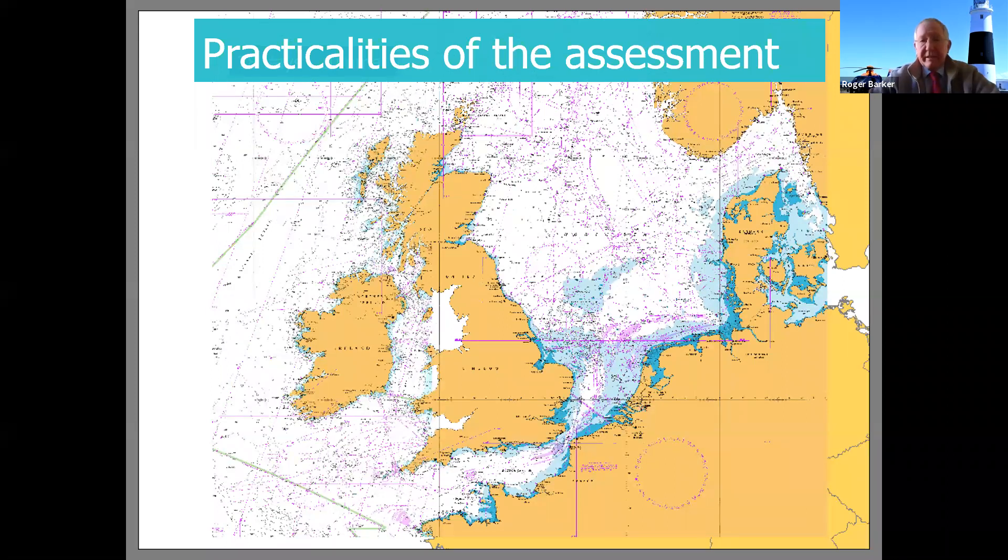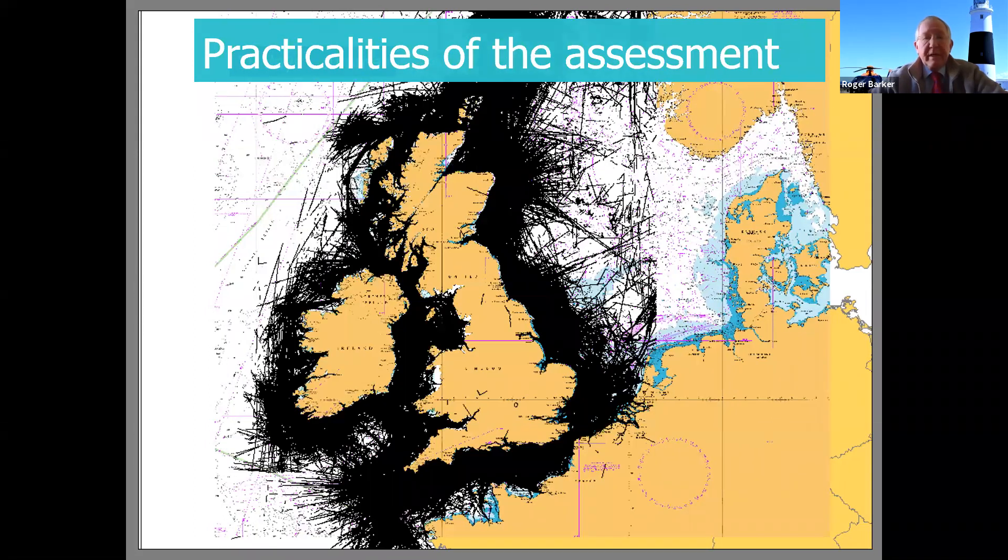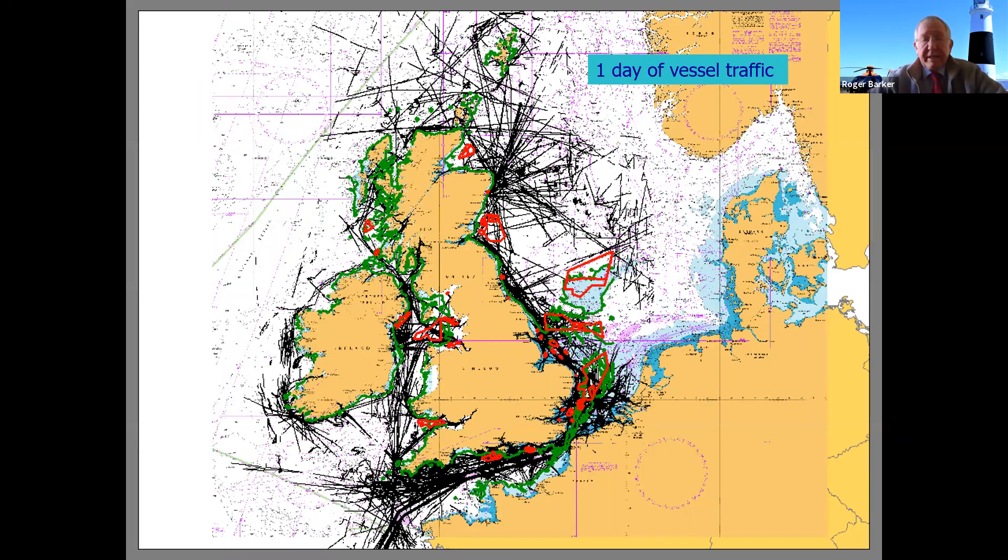Let's dig into the practicalities a little bit. If we look at the traffic over 28 days, you might say to me, what does that mean? Because we already know it's busy around the UK. That's just 28 days of traffic and it says it's busy. How does that inform the risk assessment? Well, actually, not a lot. We've got to examine qualitatively and quantitatively what that risk really means.